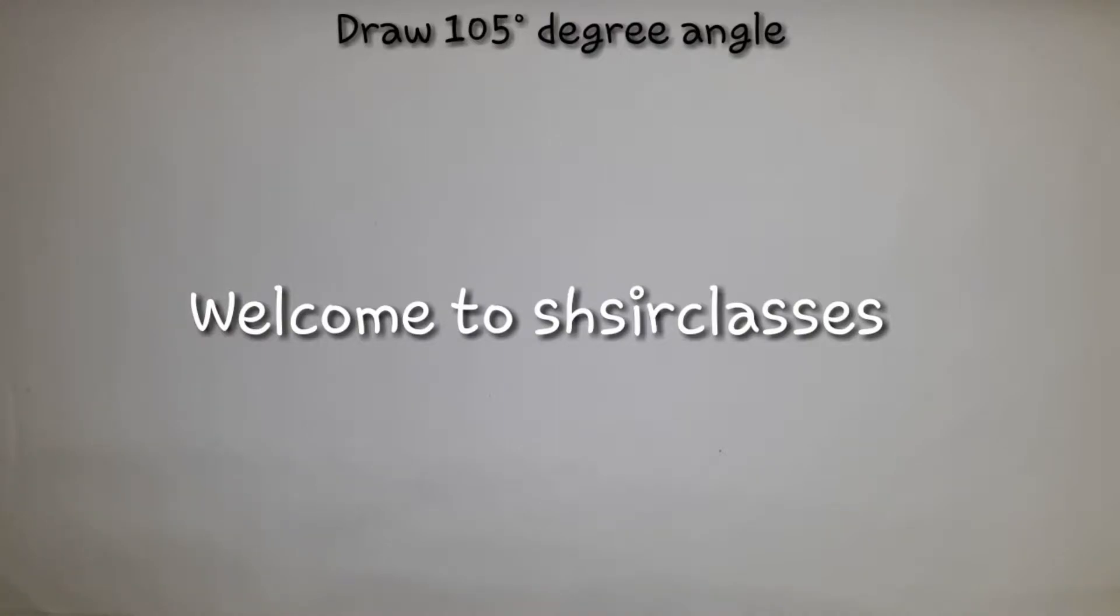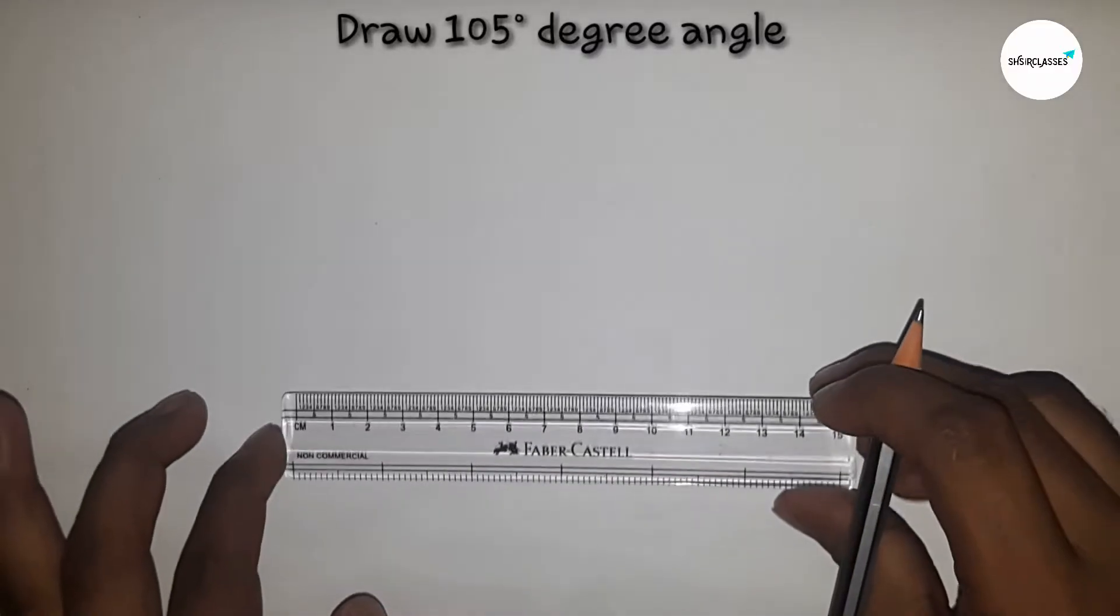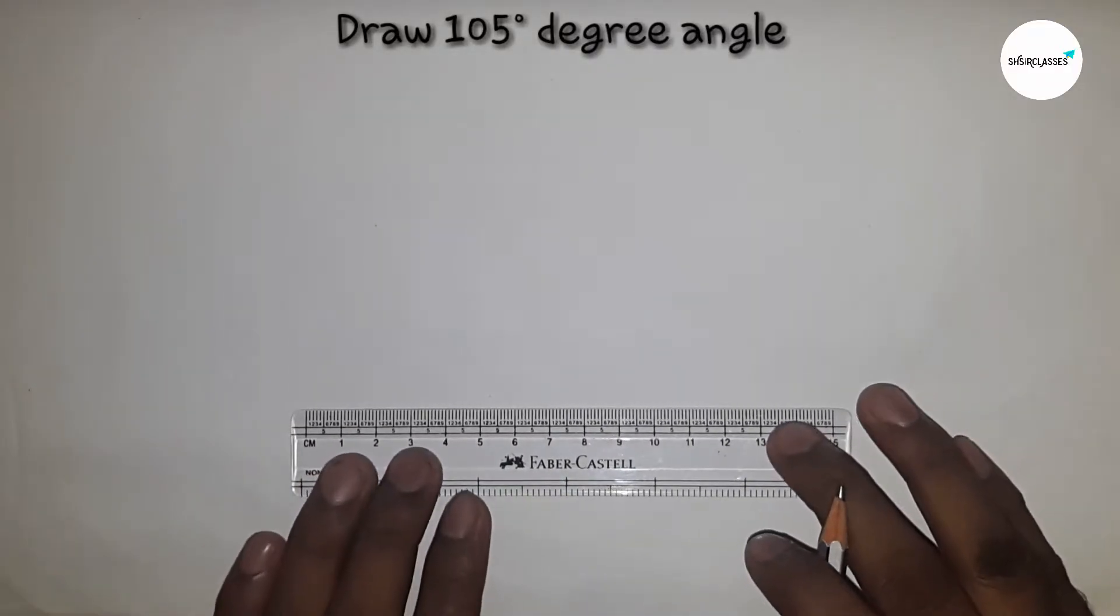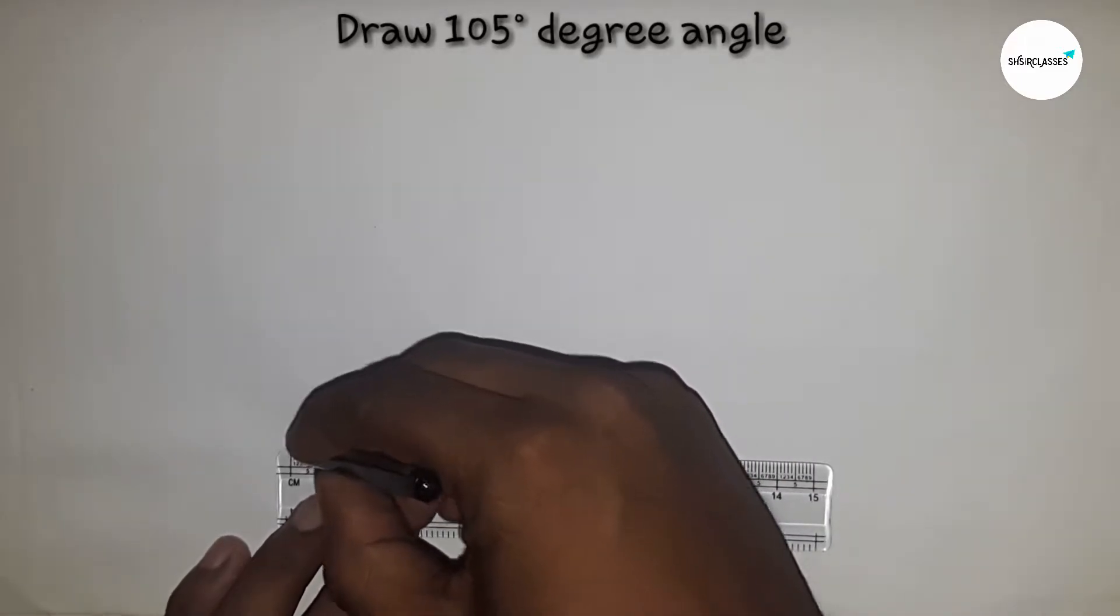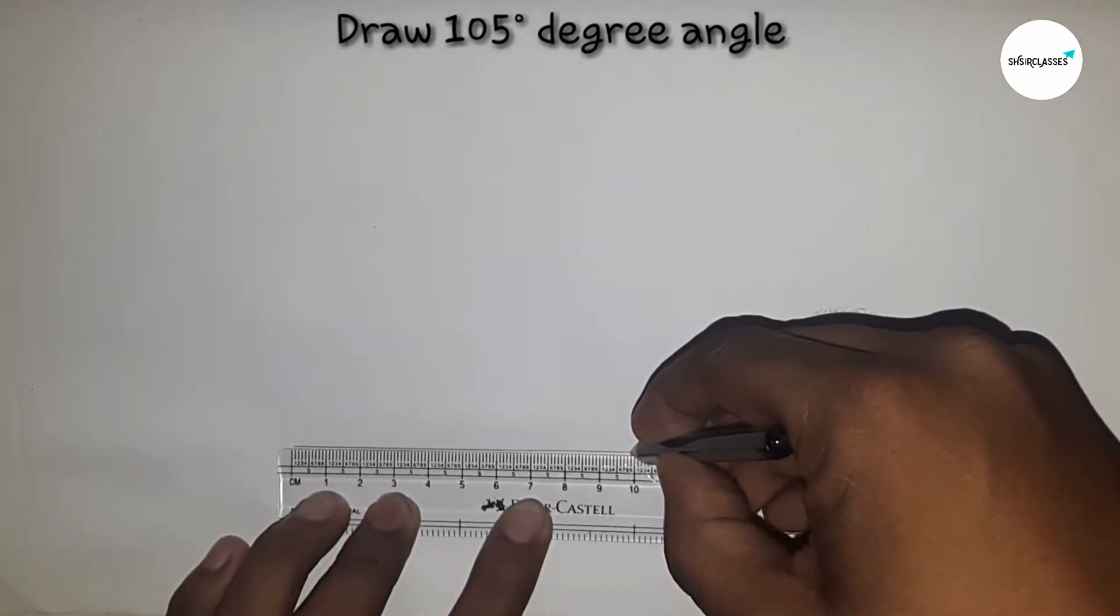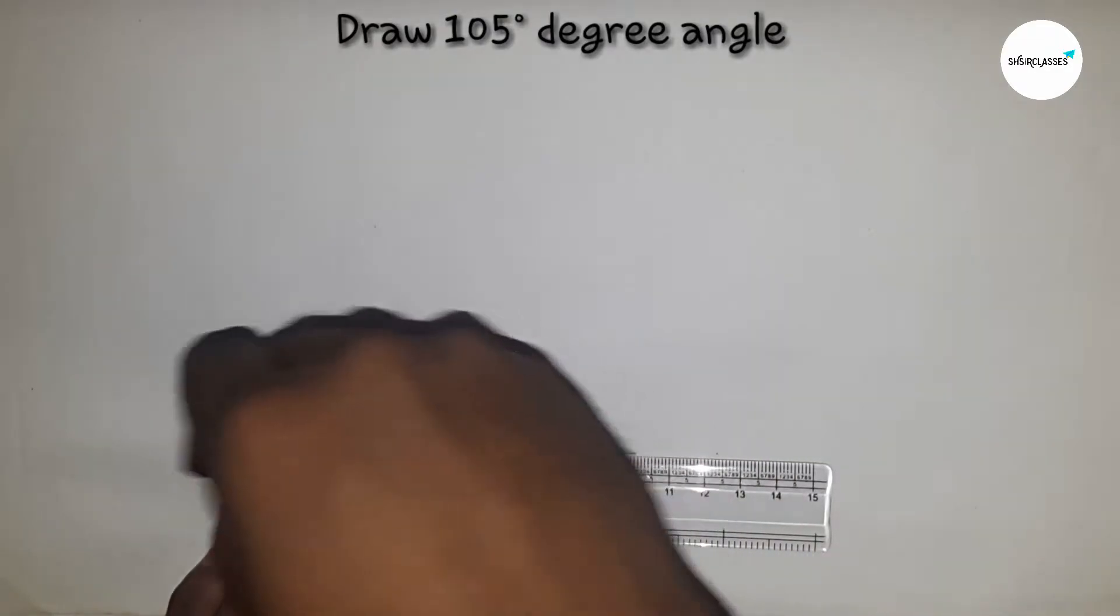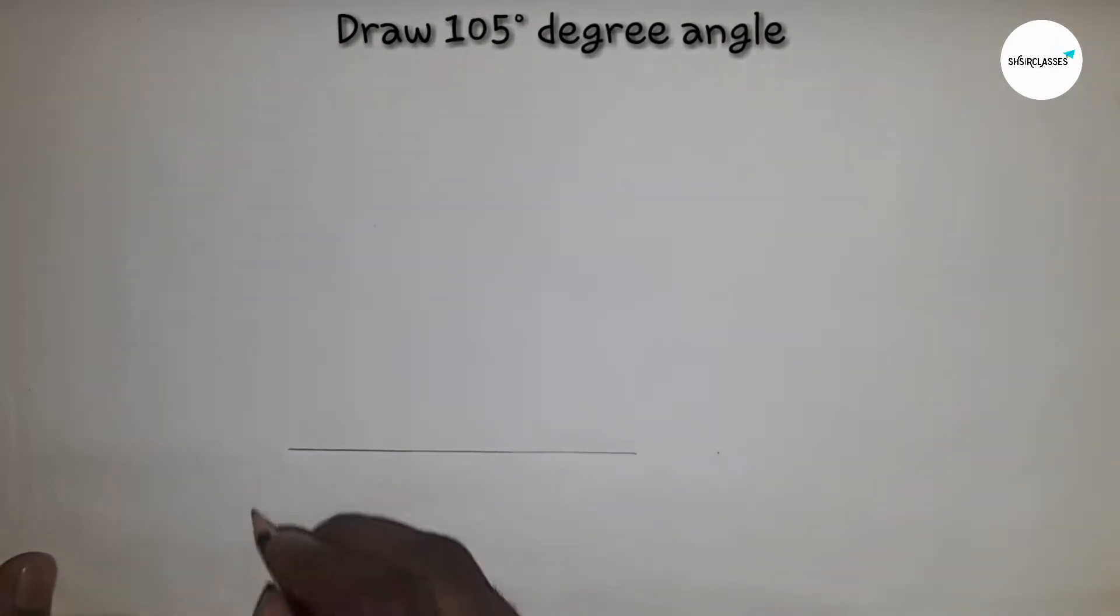Hi everyone, welcome to my channel SHR Classes. In this video I am going to draw a 105 degree angle using pencil and compass. First of all, drawing a line of length 10 cm and the line is BC.